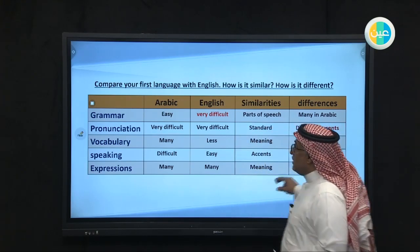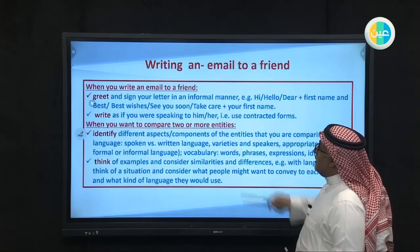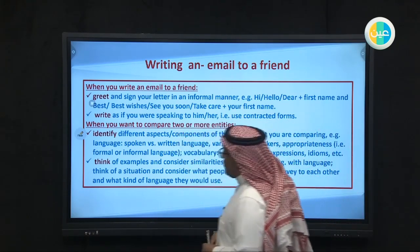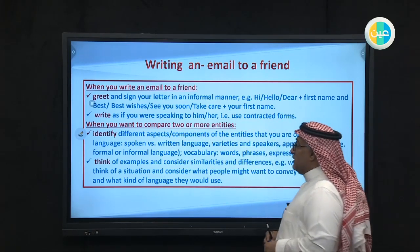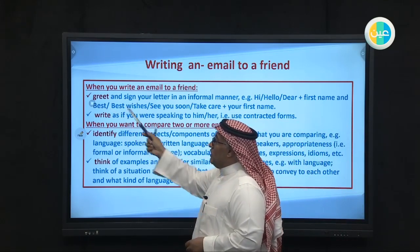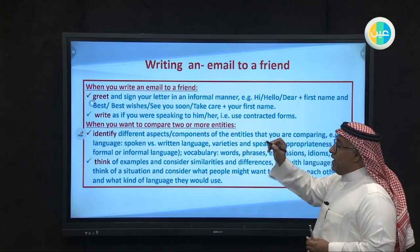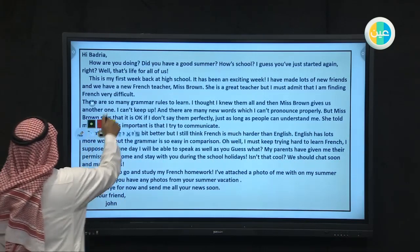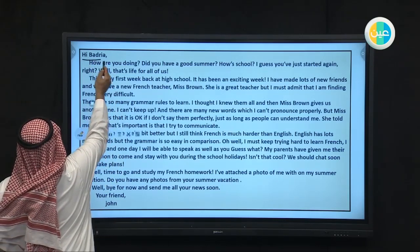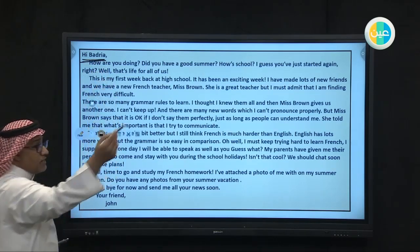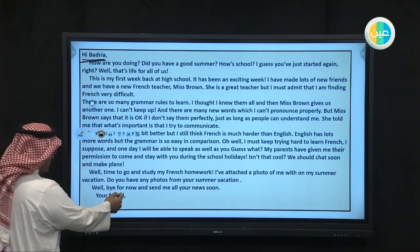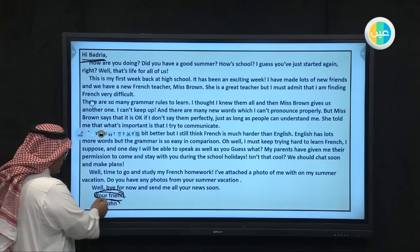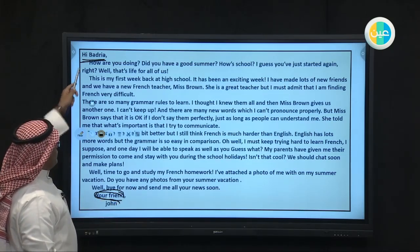Now from this table we will move to learn how to write an email to a friend. We have some steps. First, you have to greet your friend. When you write an email, you have to greet your friend. Greet by mentioning his name — for example: 'Hi Badria,' 'Hi Ali,' 'Hi Ahmed.' Sign with your name at the end. Write the name of your friend at the top and your own name at the bottom.